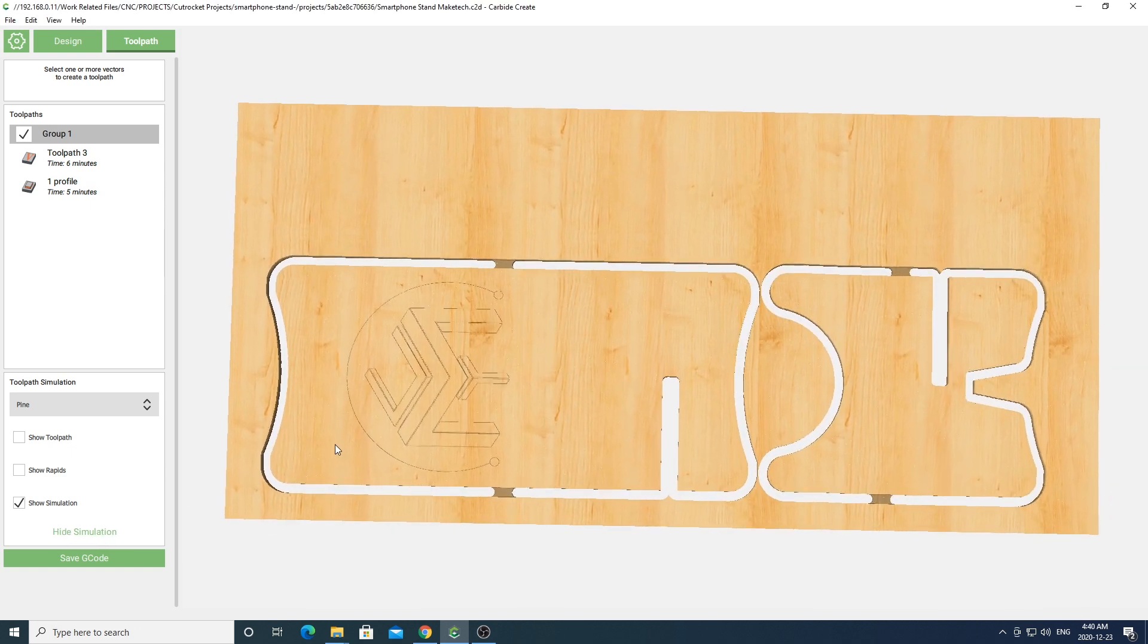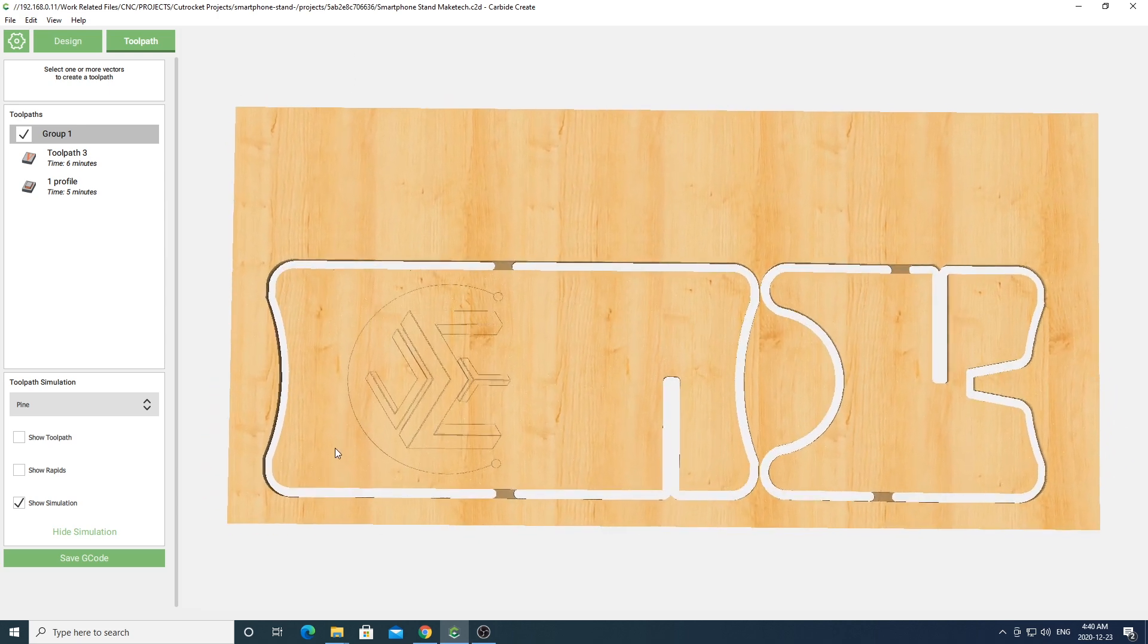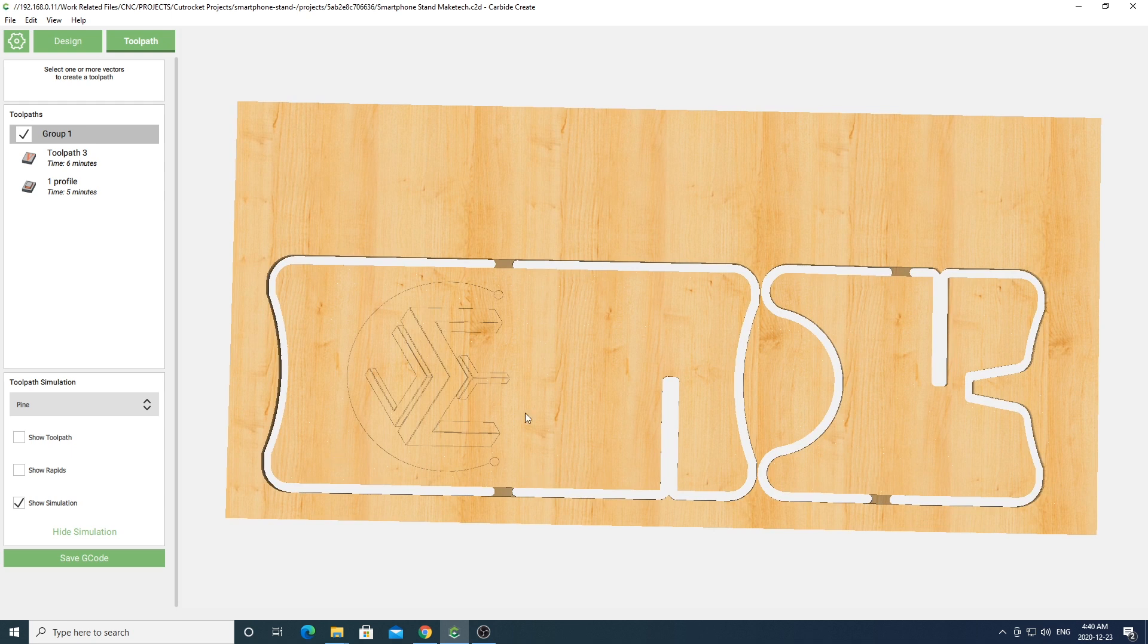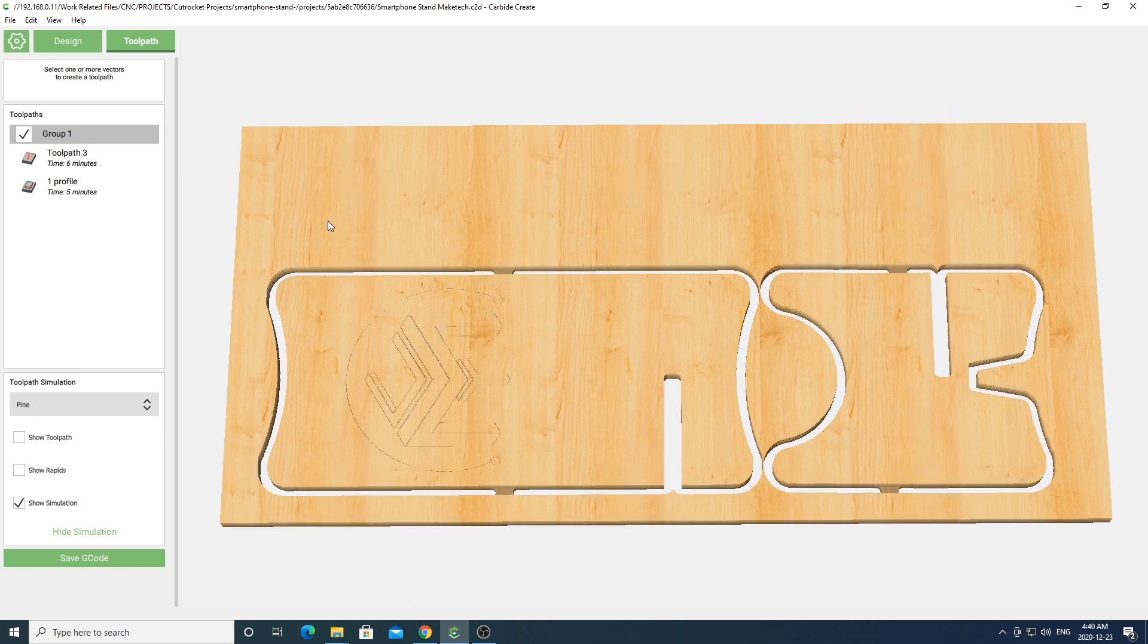The next tool path is for the cutout of the project. You'll of course have to change the feeds and speeds here for whatever material you'll be using for your project. You can of course use the built-in defaults if you're not sure what to use. Once you're done hit the simulate button and go ahead and view your project.